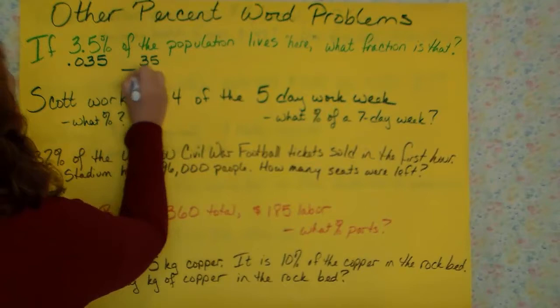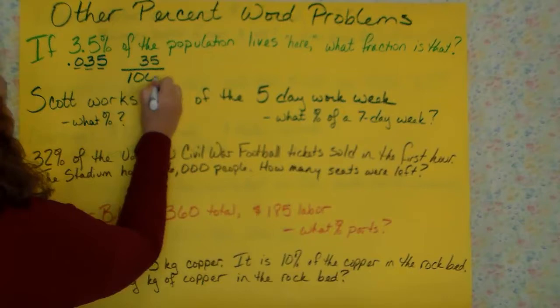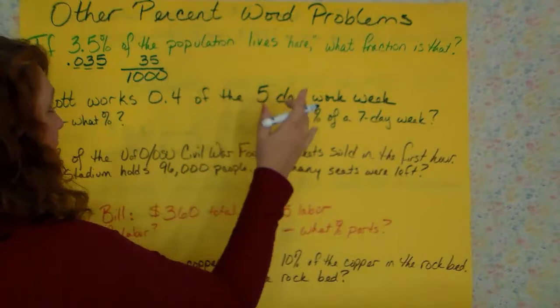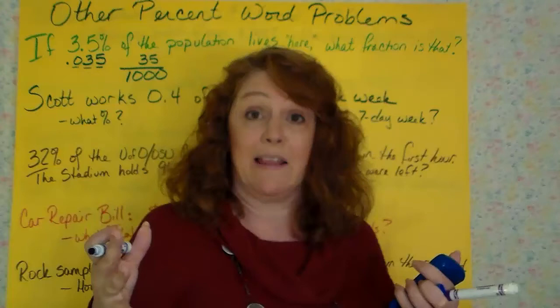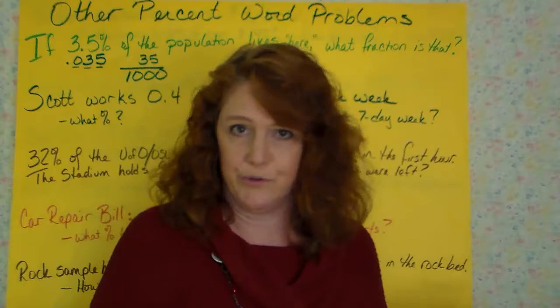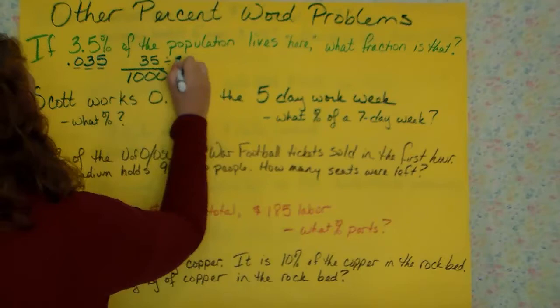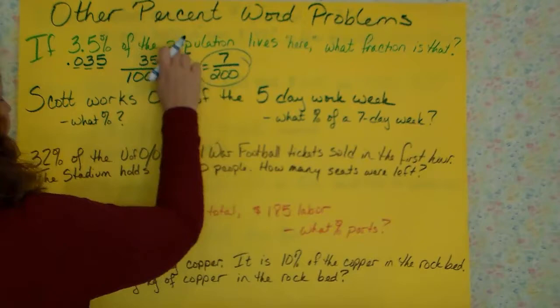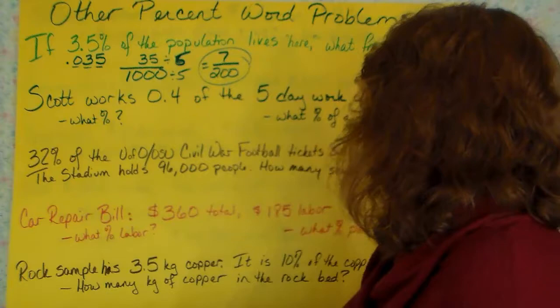This is 35 over 1, 2, 3 places, 1, 2, 3 zeros, this whole number over 1, 2, 3 zeros. Now I need you to reduce this fraction. When you've got 10, 100, or 1,000 on the bottom, you can only divide by 2 and by 5 and by multiples of those. I'm going to divide the top and the bottom by 5, and I'm going to end up with 7 over 200, and 7's a prime number, so I know that I'm done. This is the fraction of the population represented by 3.5%.